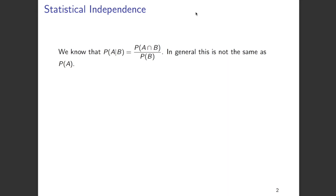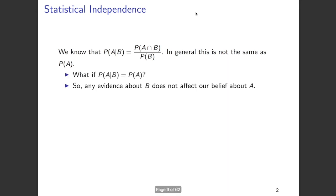But under which circumstances can this happen? That is, when is the probability of A given B equal to the probability of A? This can only happen when any evidence about B does not influence our belief about A.